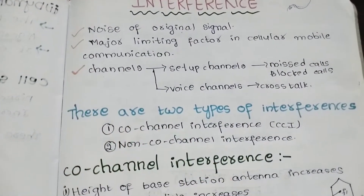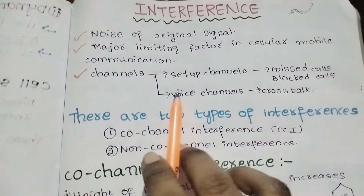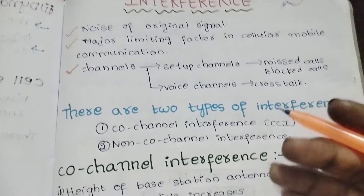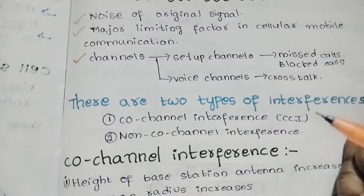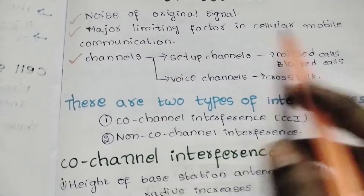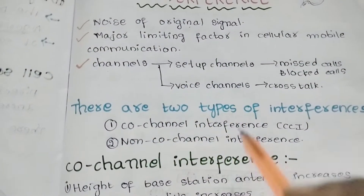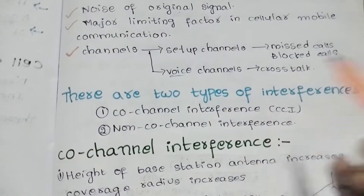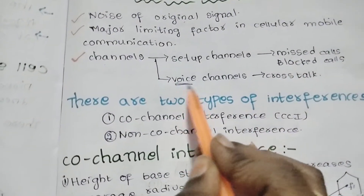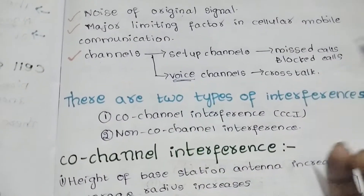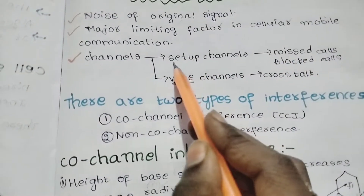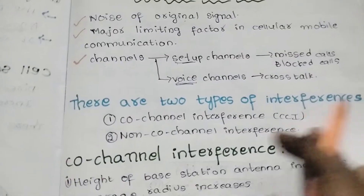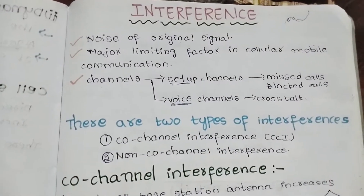There are two types of channels: setup channels and voice channels. Setup channels are used to record missed calls and blocked calls. If we connect a call, we create voice channels. If you have blocked calls or missed calls, you allocate the setup channels. That is about interference.